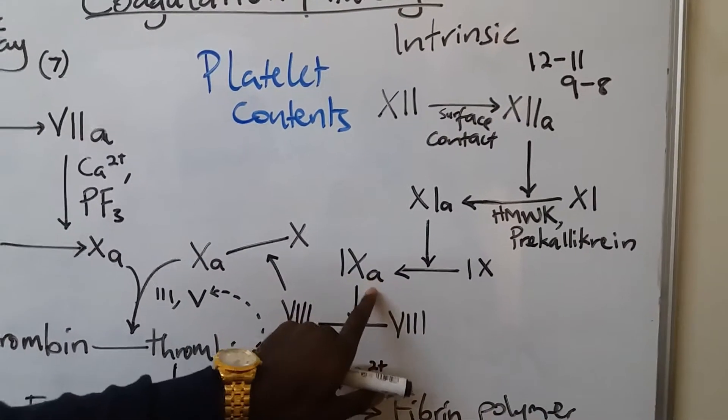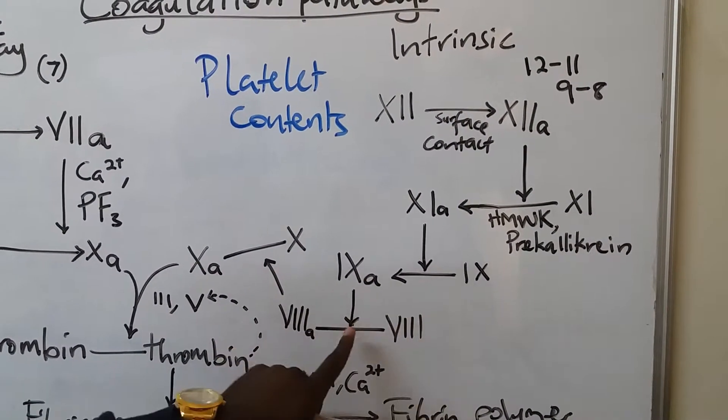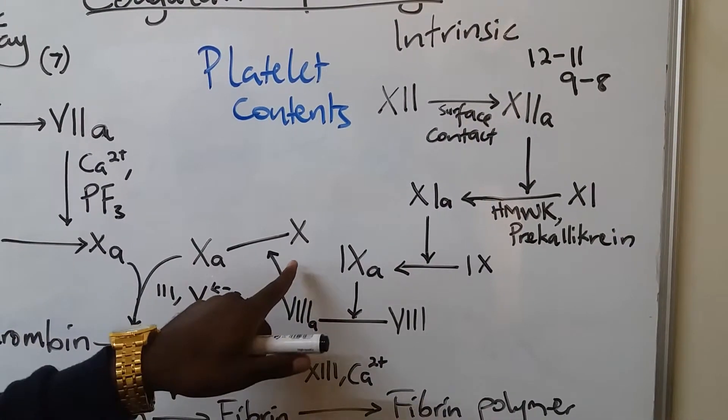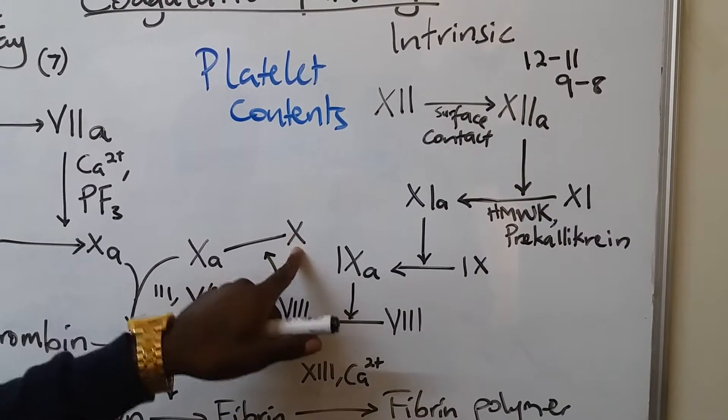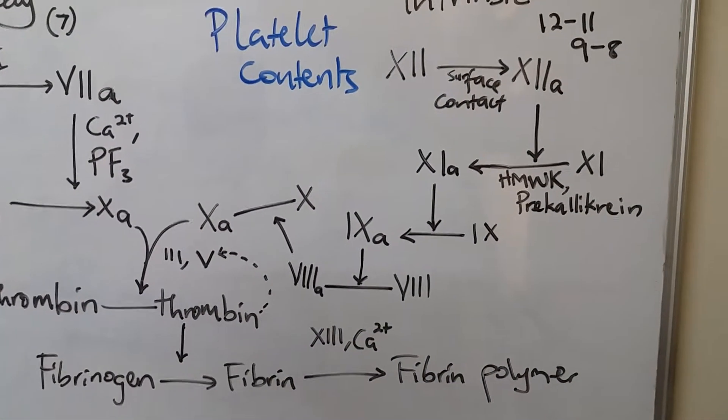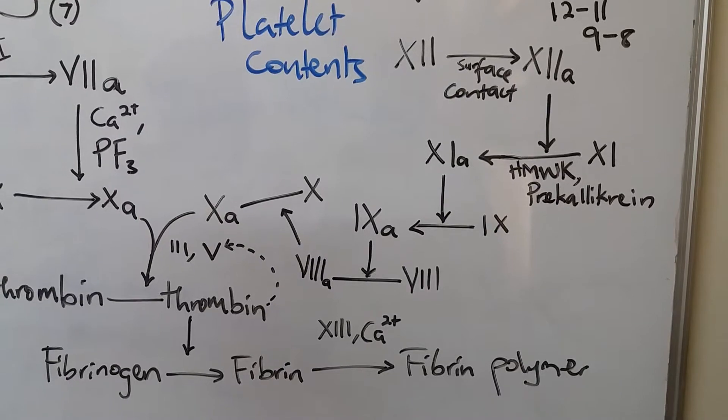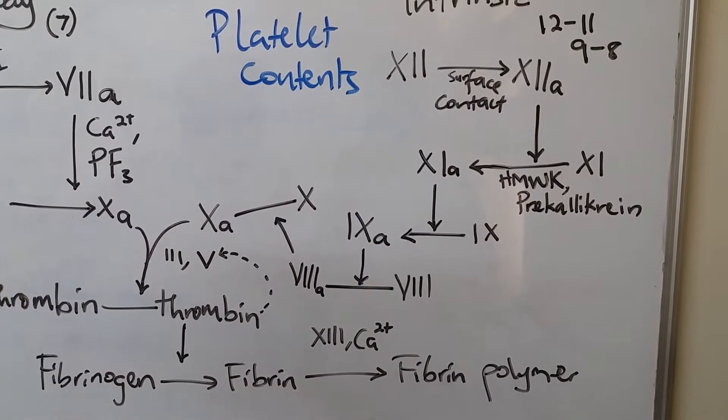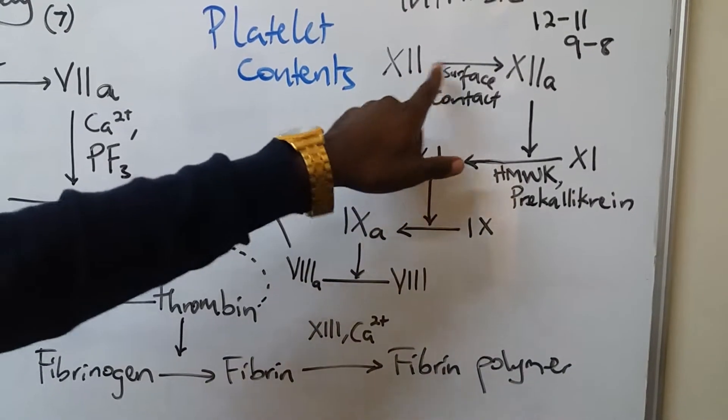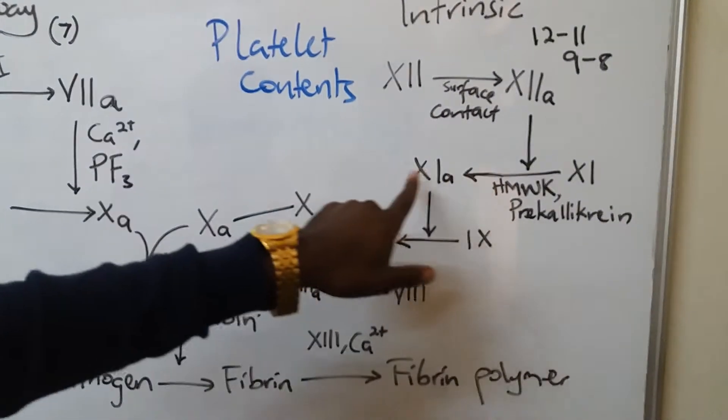This is activated 9. Activated 9 will come and activate 8. 8 is the one which will finally activate 10 to activated 10. You should note that all these processes and activations involve calcium and platelet phospholipids except the first two steps of the intrinsic pathway, which is activation of twelve and activation of 11.